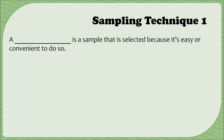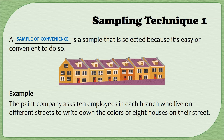The first sampling technique is the easiest one to do. It's called a sample of convenience because it's convenient — it's easy for the researcher to conduct. In our example, the paint company asks 10 employees in each branch who live on different streets to write down the colors of eight houses on their street. If your boss asks you to do something, you're probably going to do it. The employees just look down their street — not a very challenging task — resulting in 80 houses from San Diego and 80 from Boston.